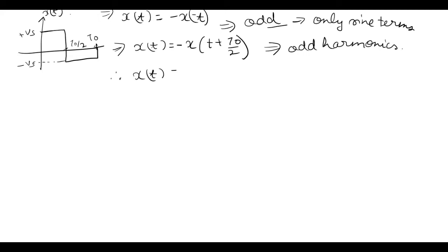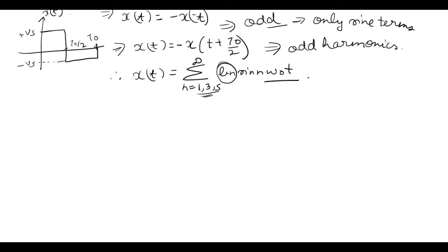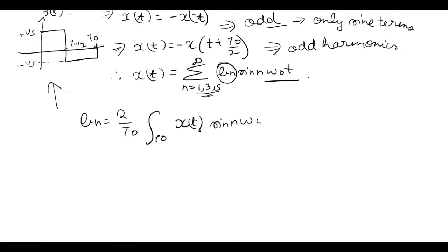Therefore x(t) will be written in the form with n equal to 1, 3, 5 — odd harmonics — as summation of dn sin(nω₀t). Now we are going to find dn. In this case bn equals 2 upon T0, integration over T0 of x(t) sin(nω₀t) dt.